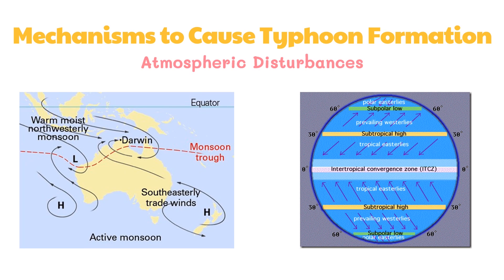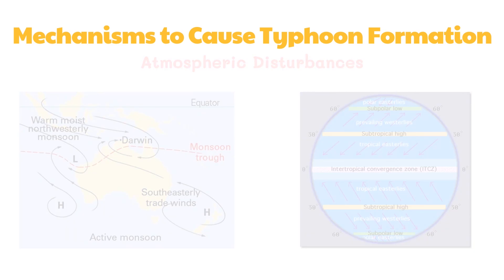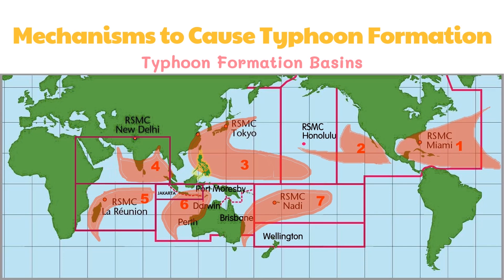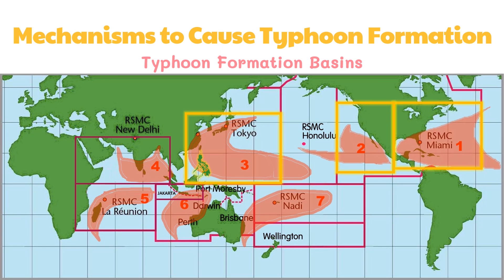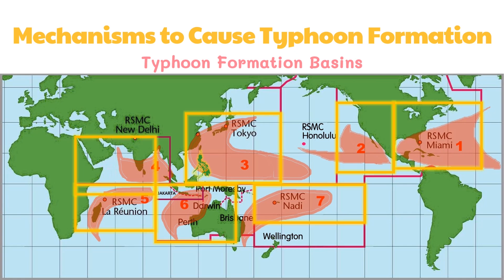Typhoons are caused mostly by the monsoon trough in six of the seven hurricane or typhoon formation basins of the world. Here is an illustration of the typhoon formation basins in the world. These include the North Atlantic Ocean, the eastern and western parts of the northern Pacific Ocean, the southwestern Pacific, the southwestern and southeastern Indian Oceans, and the northern Indian Ocean — the Arabian Sea and Bay of Bengal. Collectively, the western Pacific is the most active and the northern Indian the least active. This is why the Philippines is visited by an average of 20 typhoons every year, since it is located on the western Pacific.